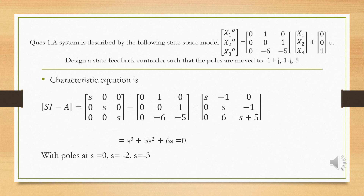Now we will solve a problem. A system is described by the following state space model: x-dot equals [0 1 0; 0 0 1; 0 -6 -5] x plus [0; 0; 1] u. System matrix A is [0 1 0; 0 0 1; 0 -6 -5] and B is [0; 0; 1]. We are asked to design a state feedback controller such that the poles are moved to minus 1 plus or minus j and minus 5.